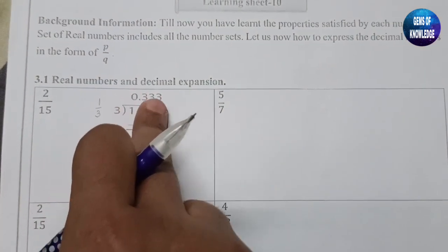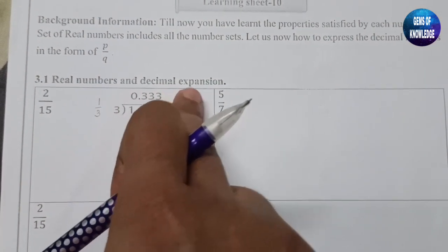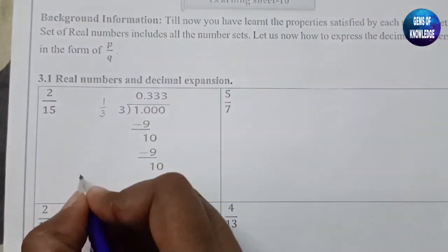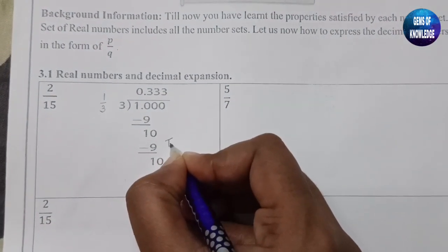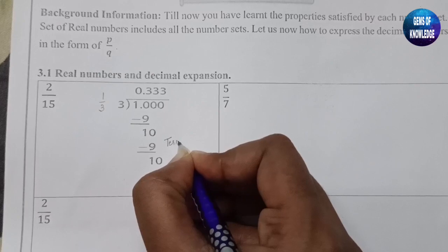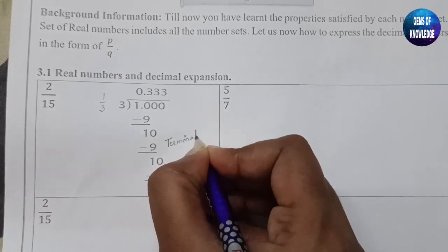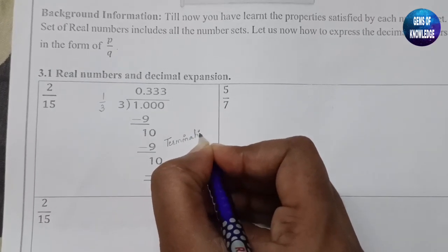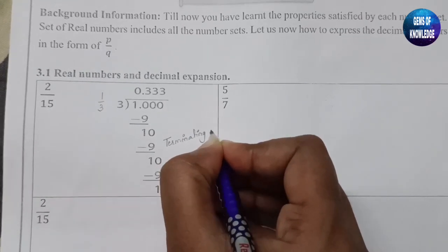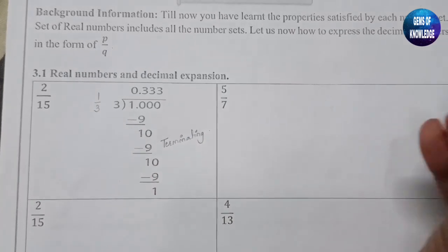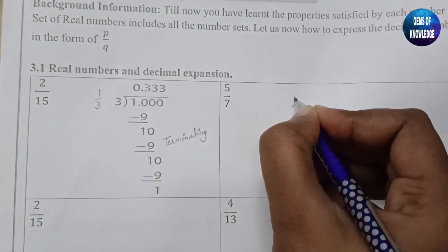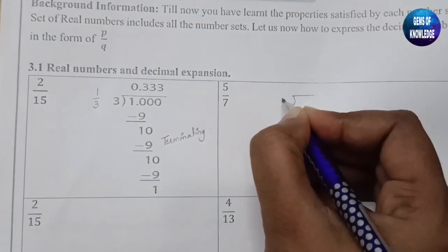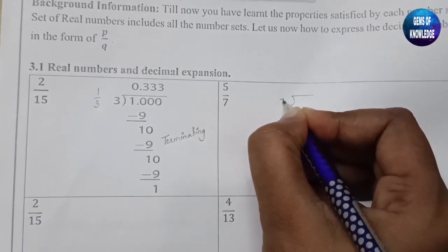This type of expansion where you get 0.33333 continuing is called — let me check — this is terminating expansion. Let's quickly see the second one: 5 by 7 is given, where 7 is the denominator.